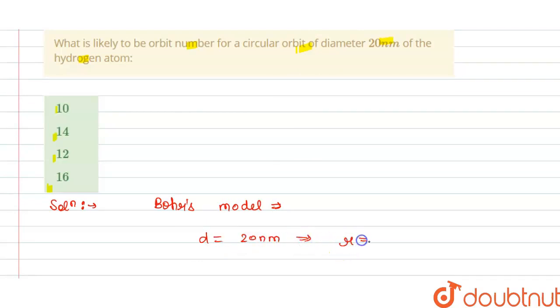And we know that radius is d divided by 2, so radius is 20 divided by 2, that is 10 nanometer.